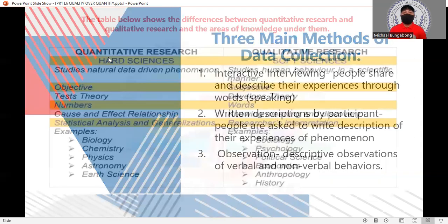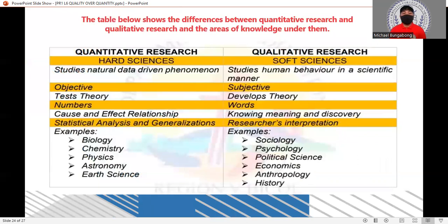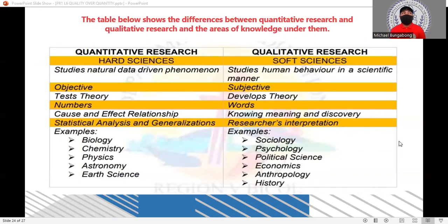The table on screen shows the differences between quantitative research and qualitative research and the areas of knowledge under each. On the left side is quantitative research and on the right is qualitative research. Let's compare hard sciences and soft sciences, since many students are confused about what belongs to each. Hard sciences are the studies of natural, data-driven phenomena, while soft sciences study human behavior in a scientific manner.